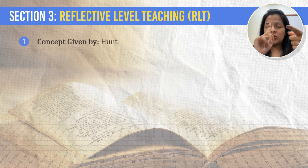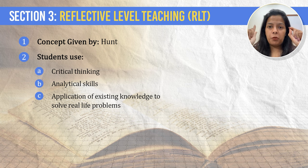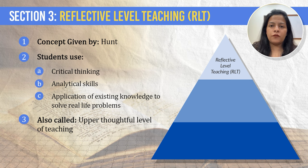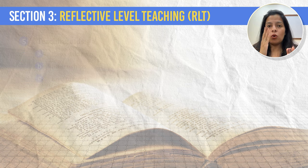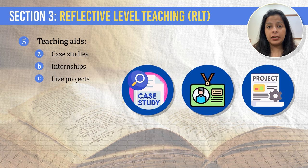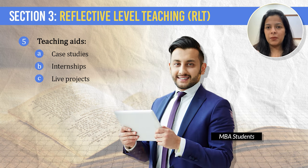Let's look at some features of the reflective level. Number one, you need to remember this level was given by Hunt. Number two, under this level, students use critical thinking and analysis and apply knowledge to real-life problems. Since students learn to use their critical thinking abilities, this is the most thoughtful level - the upper thoughtful level of teaching. Teachers generally take a backseat and the role of students is more dominant. Teaching aids at this level include case studies, internships, and live projects. In India's education system, this learning style is mostly seen in MBA programs.